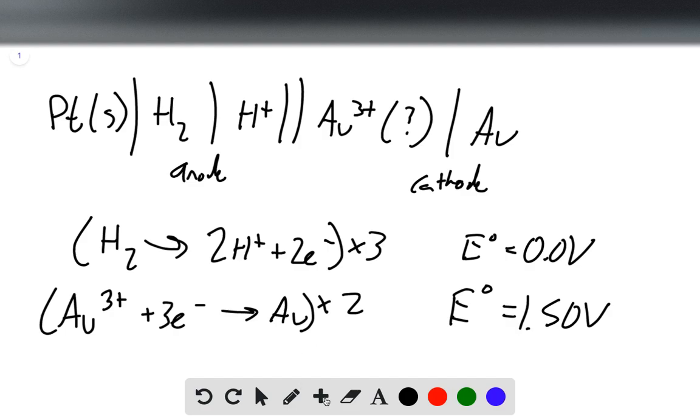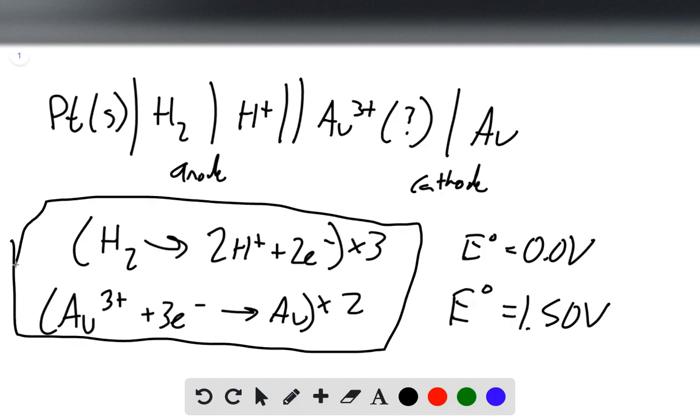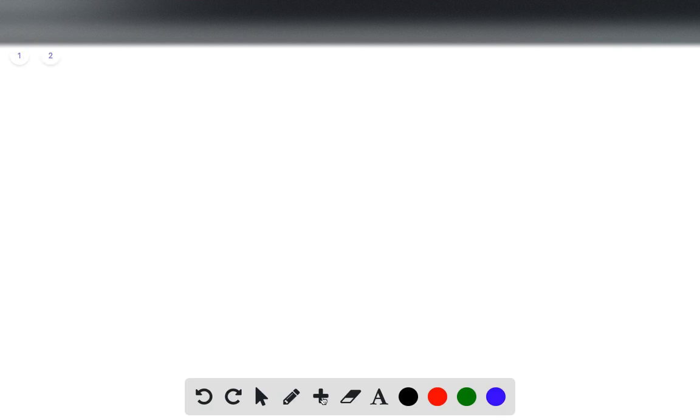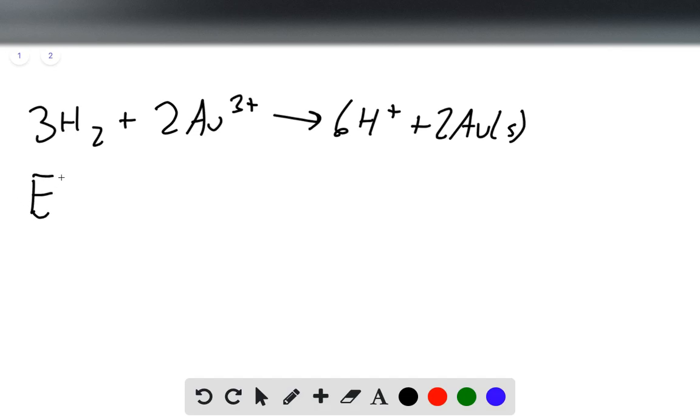Now I'll go to a new page, and we can combine these two equations to get an overall equation. That overall equation is 3H2 plus 2Au³⁺ forms 6H⁺ plus 2Au solid. Now that we have this, we know that our E°cell is 1.50 volts, because it's just 1.50 plus 0, which is still 1.50.